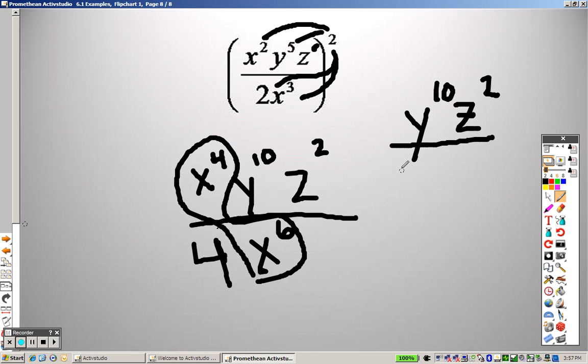So 4 on the bottom still, but the x's. Well, which x is bigger, top or bottom? Well, the bottom. So it's x. And 4 minus 6 is negative 2, so I have a 2 on the bottom.